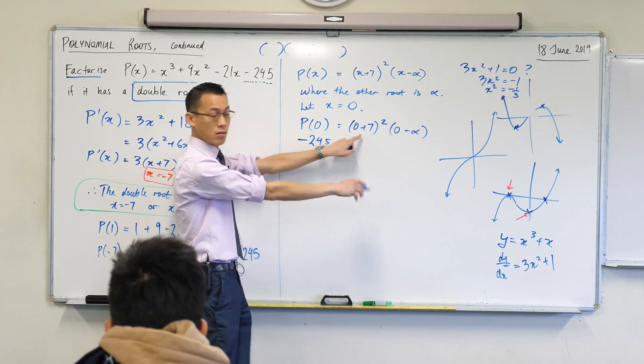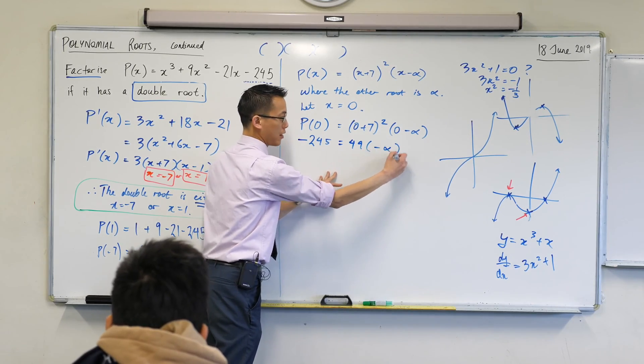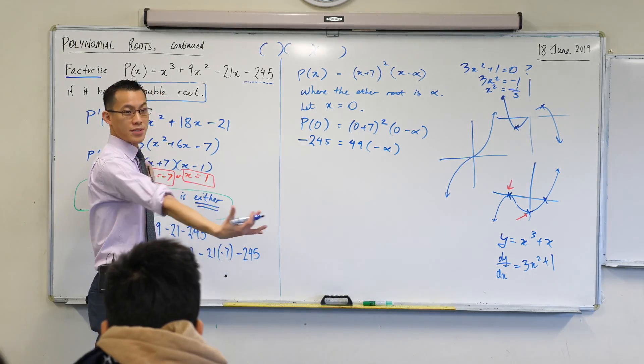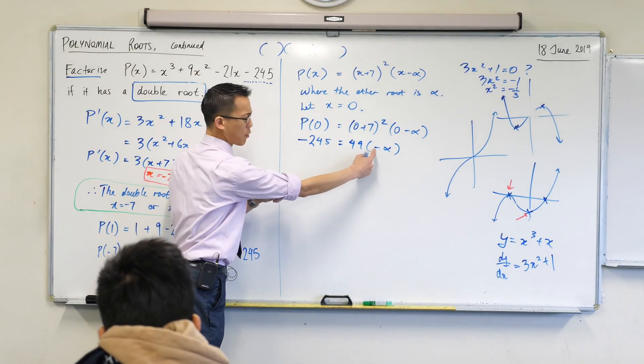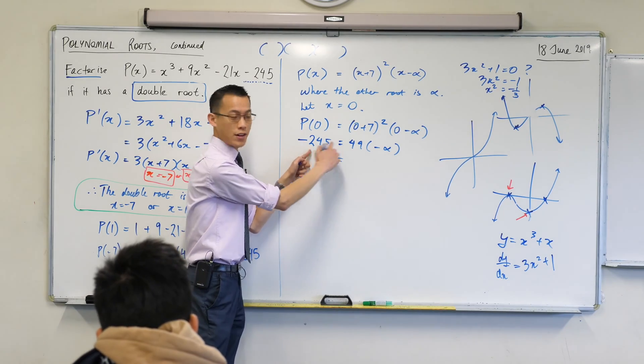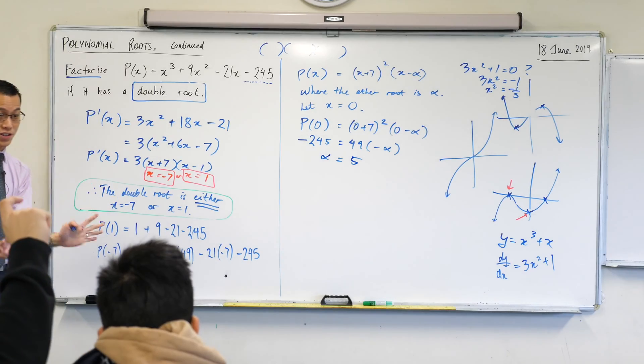What's this equal to? 49. And then, of course, you've just got negative alpha here, right? And now you can see, if all I want is alpha, what should I divide both sides by? Yeah, probably the negative as well, and when you divide that by a negative 49, surprise, surprise, you get five. No long division required.